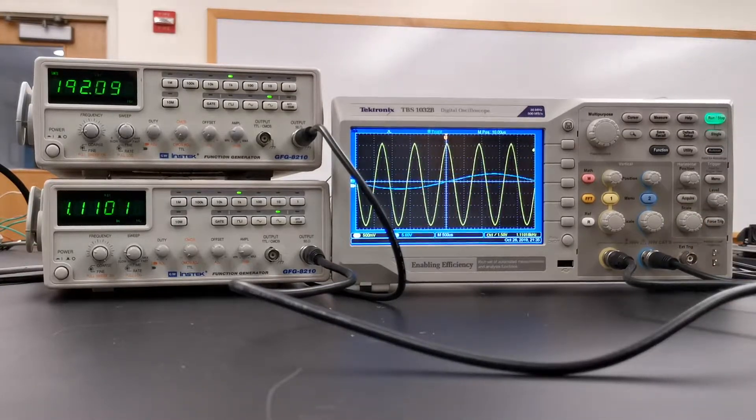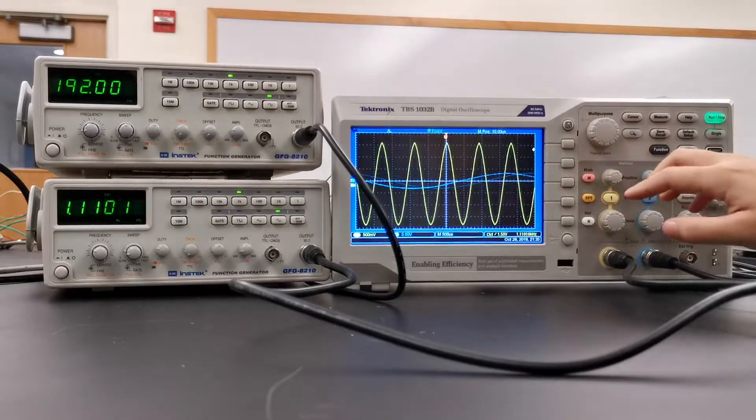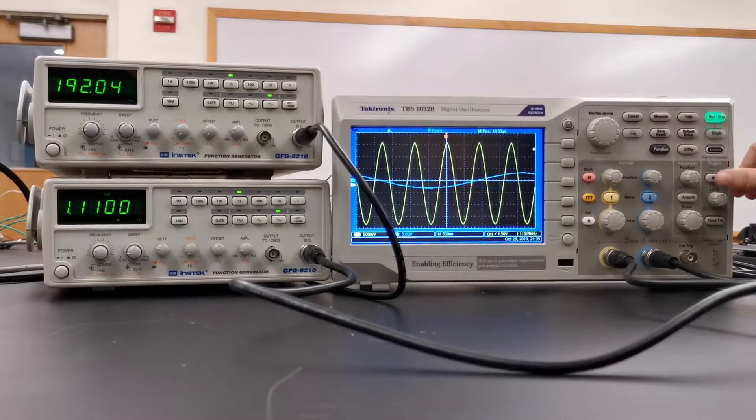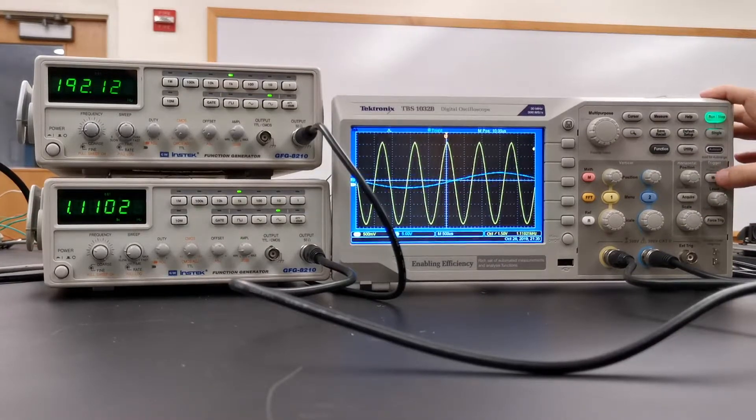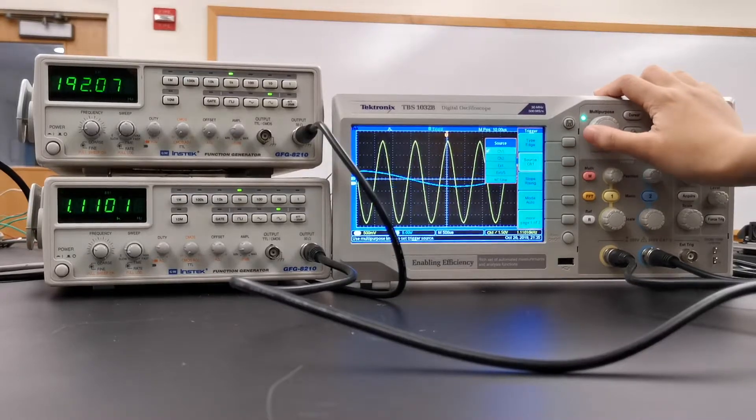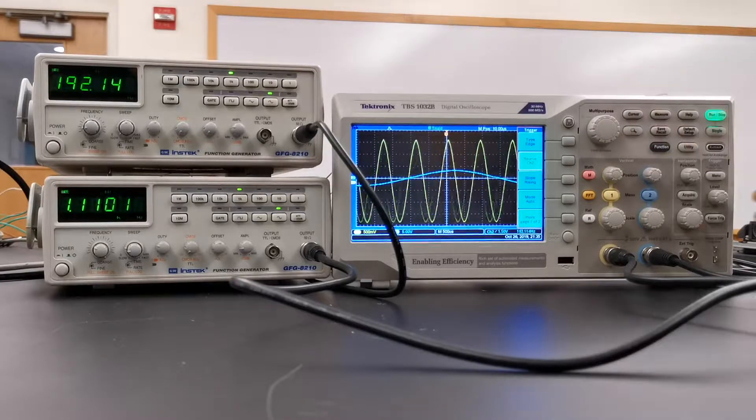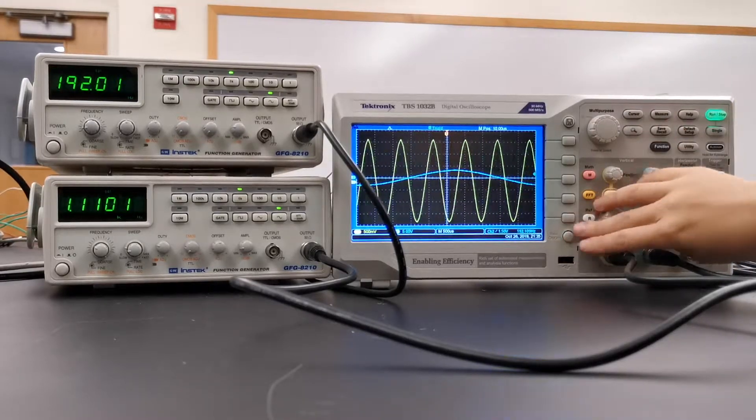And as you can see on the oscilloscope, channel one is not moving but channel two is moving. If you want to make channel two not moving, please press this trigger menu and change the source from channel one to channel two using this knob. Press the knob down. It's on channel two.